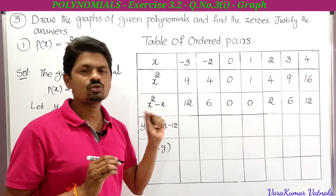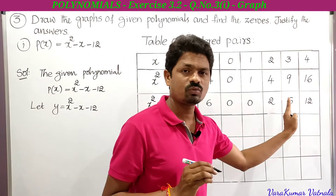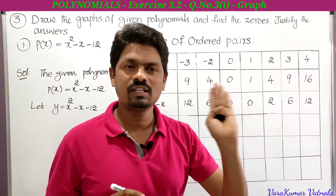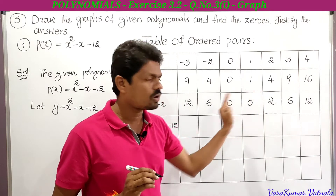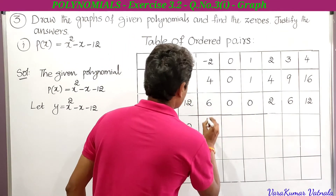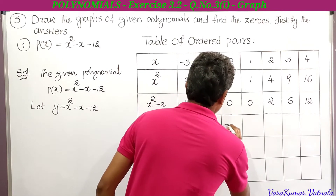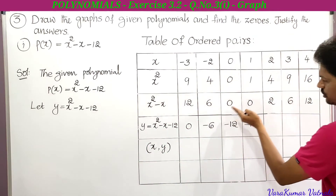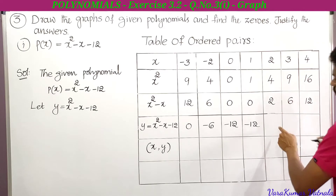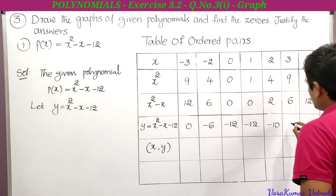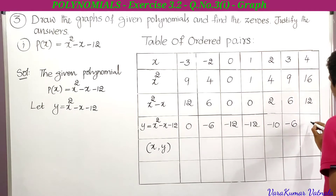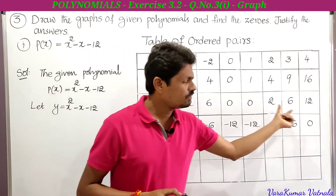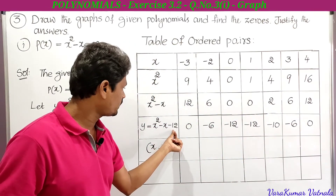Next, we find x² - x - 12 by subtracting 12 from each x² - x value: 12 - 12 = 0; 6 - 12 = -6; 0 - 12 = -12; 0 - 12 = -12; 2 - 12 = -10; 6 - 12 = -6; 12 - 12 = 0. So these are the y values, which are the x² - x - 12 values.